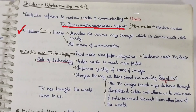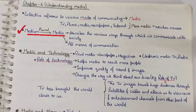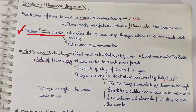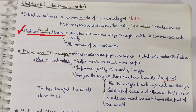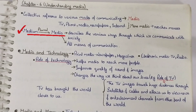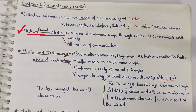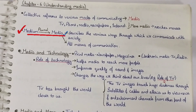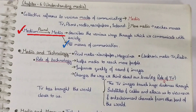Medium is the singular form of media, which means it is a single source or any part of communication. The definition of media: media describes the various ways through which we can communicate with society. All the means of communication come under media.